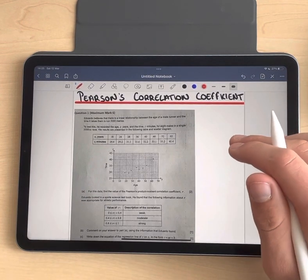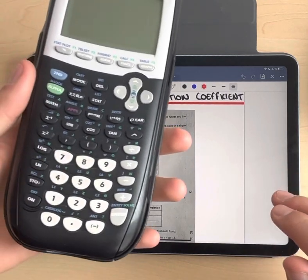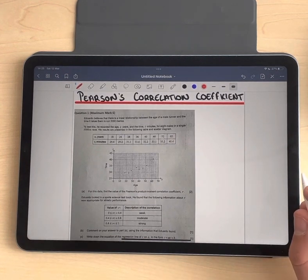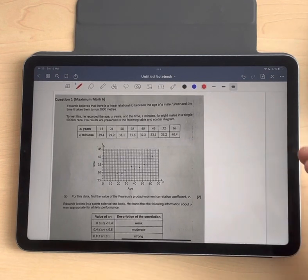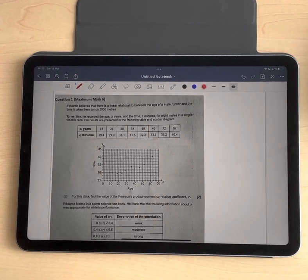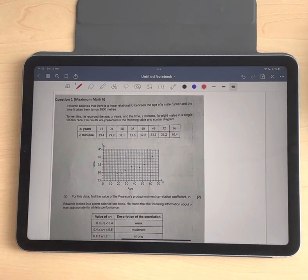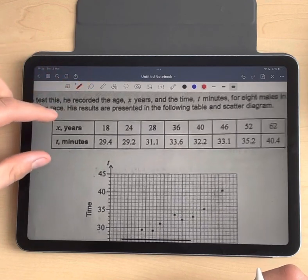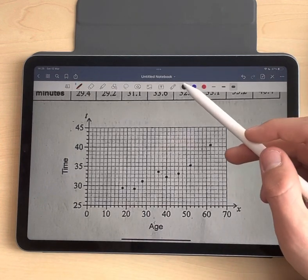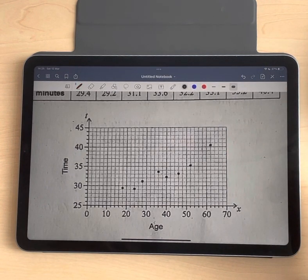To explain this, I'll teach you how to use a calculator to find the results, the TI-84. We'll do an example, a past paper example. So it's question one. Eduardo believes that there is a linear relationship between the age of a male runner and the time it takes for them to run 5,000 meters. To test this, he recorded the age X years and the time T minutes for 8 males in a single 5,000 meter race. His results are presented in the following table and scatter diagram. You can see the table here and the scatter diagram.